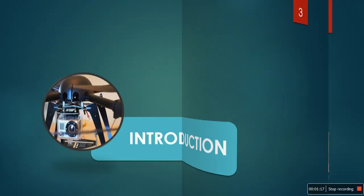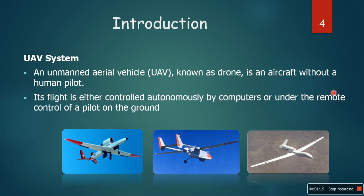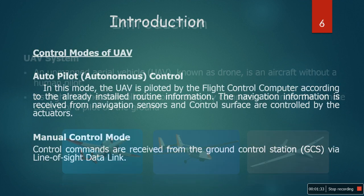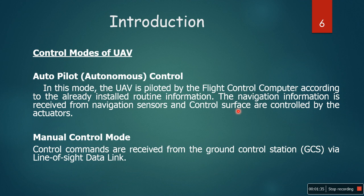Here is the introduction to the UAV system. An unmanned aerial vehicle, known as a drone, is an aircraft without a human pilot. Its flight is either controlled autonomously by computers or under the remote control of a pilot on the ground. There are two control modes: autopilot or autonomous control, and manual control. In autonomous control mode, the UAV is piloted by the flight control computer according to pre-installed route information.